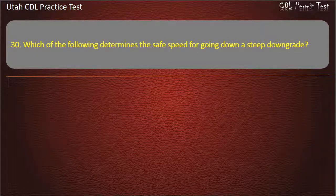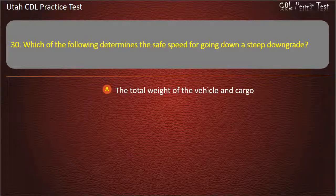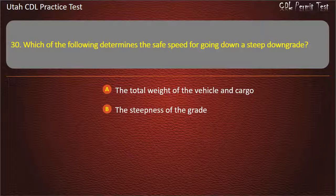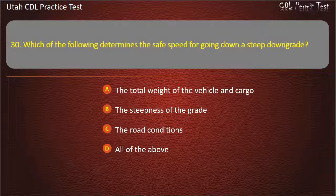Question 30. Which of the following determines the safe speed for going down a steep downgrade? The total weight of the vehicle and cargo. The steepness of the grade. The road conditions. All of the above. Answer: All of the above.